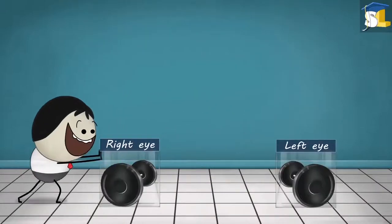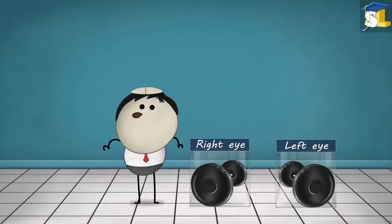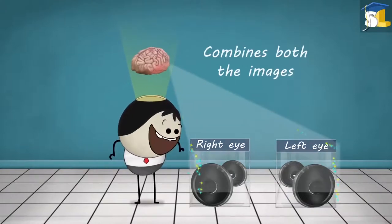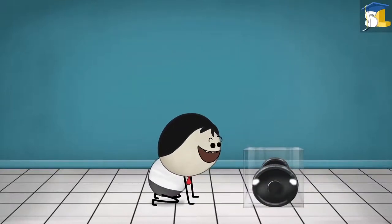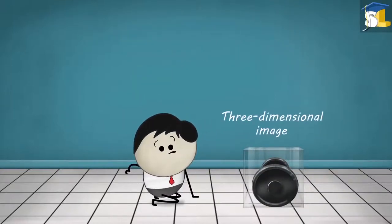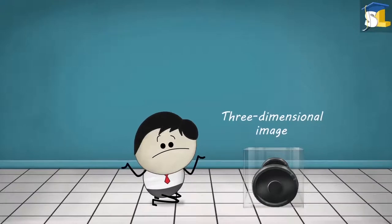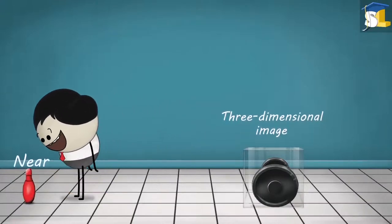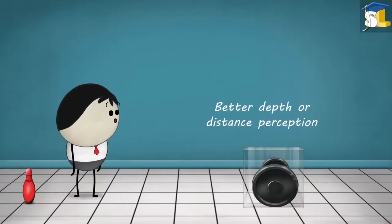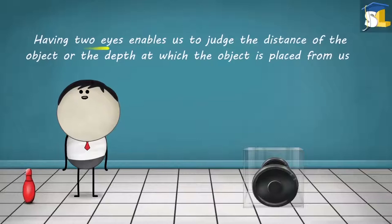Our eyes send these two slightly different images to the brain. The brain blends or combines both the images to make a three-dimensional image of the object. Hey, but what is the use of a three-dimensional image? A three-dimensional image helps us to understand how far or how near an object is from us, facilitating better depth or distance perception. This means having two eyes enables us to judge the distance of the object or the depth at which the object is placed from us.